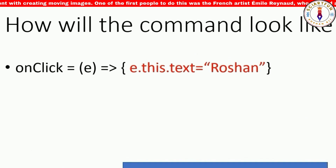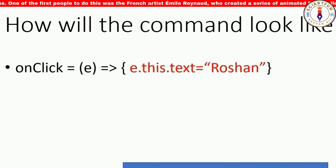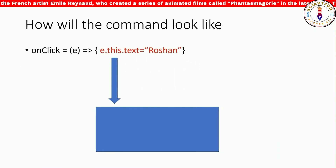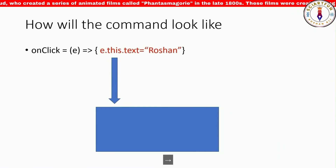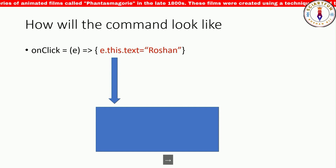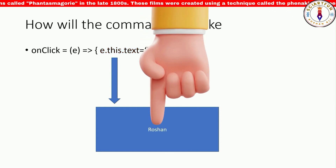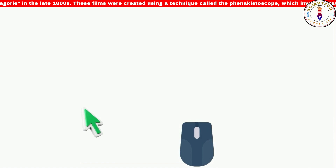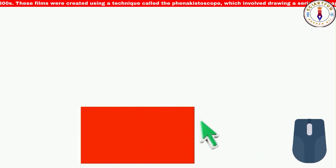The complete command will look like this: e.this.text, written inside curly brackets. This refers to the object, for example a rectangle. When you click on the object after this code is written in the onclick property, the text will appear. Let me show you the procedure. First of all you will have to create an object, for example a rectangle.